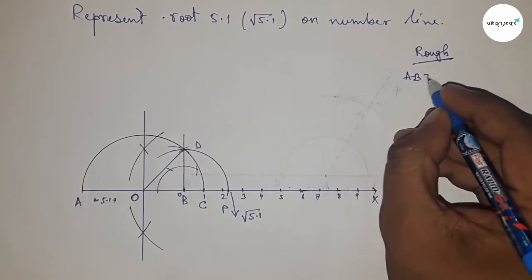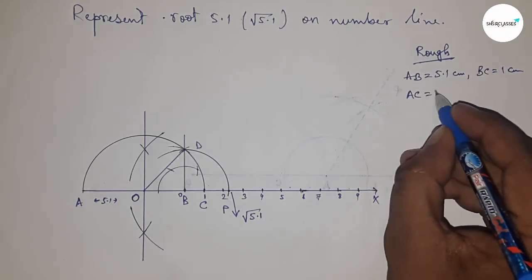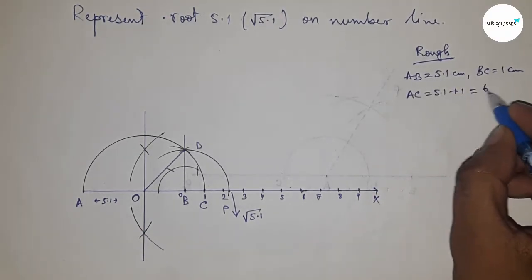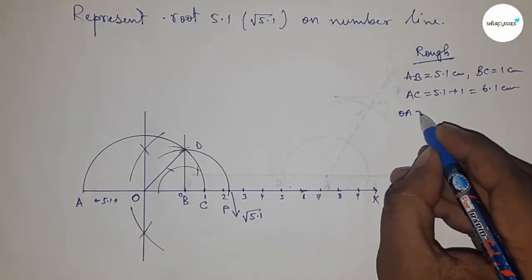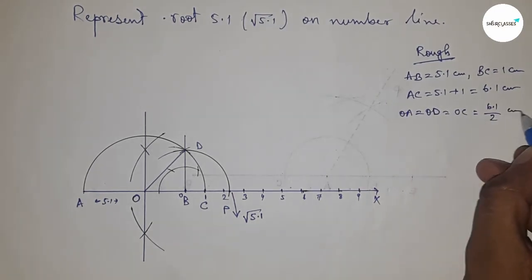Now let's discuss the calculation of √5.1. Given AB = 5.1 cm and BC = 1 cm, so AC = 5.1 + 1 = 6.1 cm. The radius OA = OC = OD = 6.1/2 centimeters.